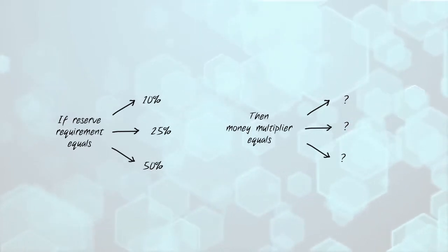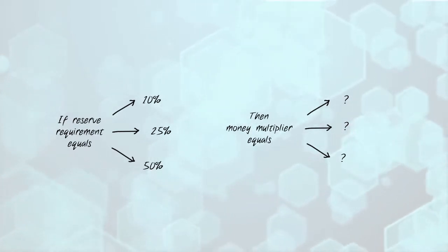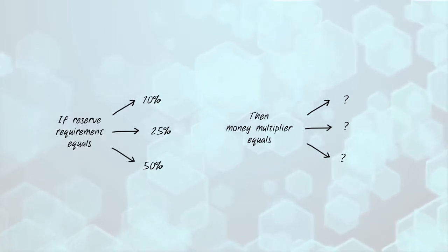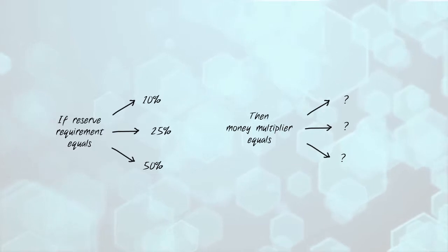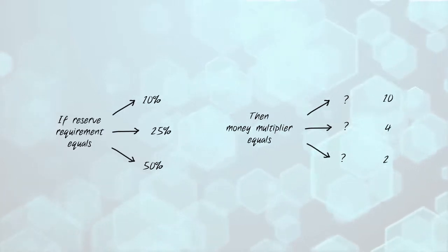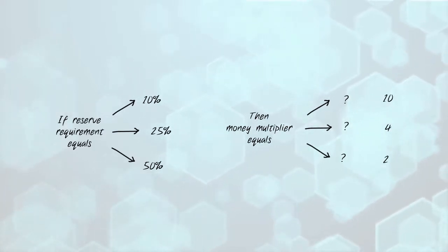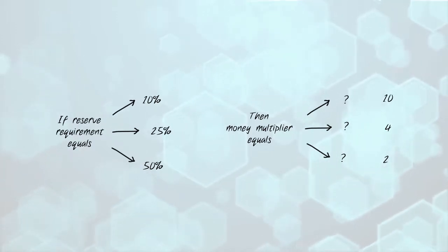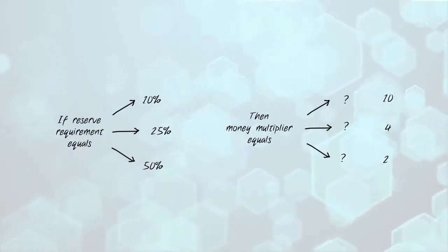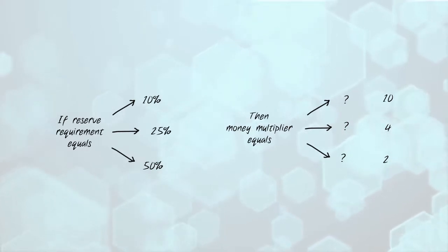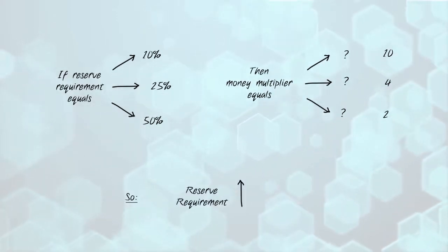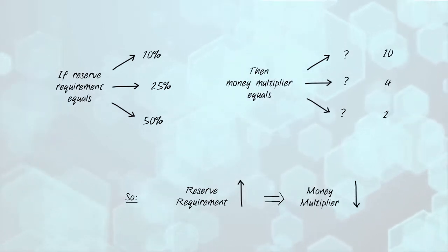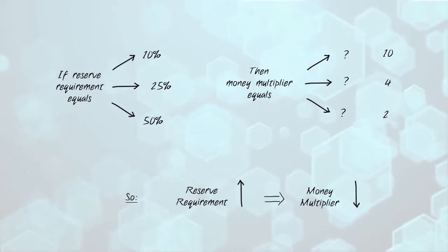If we simply apply our formula — dividing the number one by the reserve requirement — we see in this table that the multiplier falls from 10 for a reserve requirement of 10% to only 2 for a reserve requirement of 50%. This should be an intuitive result because the higher the reserve requirement for a bank, the less money it can lend out and therefore the less money the lending process will create.